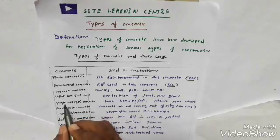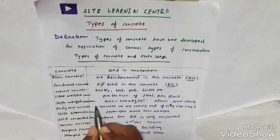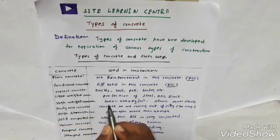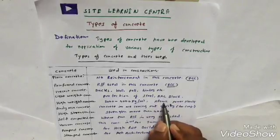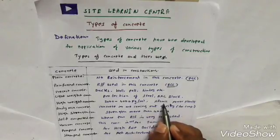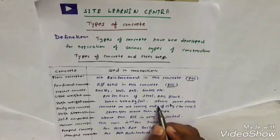The fifth type is heavyweight concrete. This concrete has a density of 3000 to 4000 kg per cubic meter. It is used for atomic power plants because in atomic power plants there is much radiation, and that's why we use this heavyweight concrete.